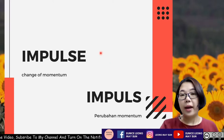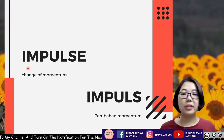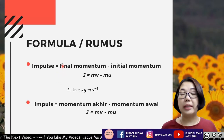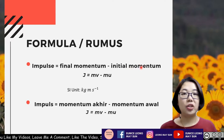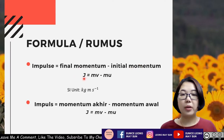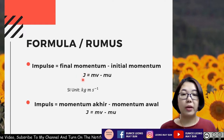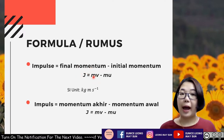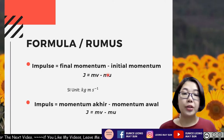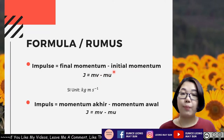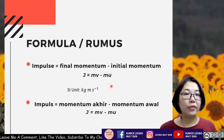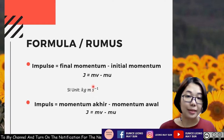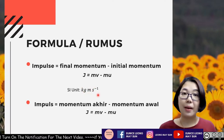So what is impulse? Impulse, by definition, is the change of momentum — the final momentum minus the initial momentum. The formula for impulse: the symbol is J. Final momentum is mv, where m is mass and v is final velocity, minus initial momentum mu, where u is initial velocity. The SI unit for impulse is the same as momentum: kg·m/s.